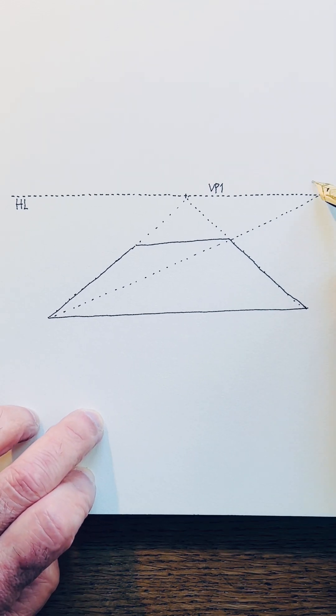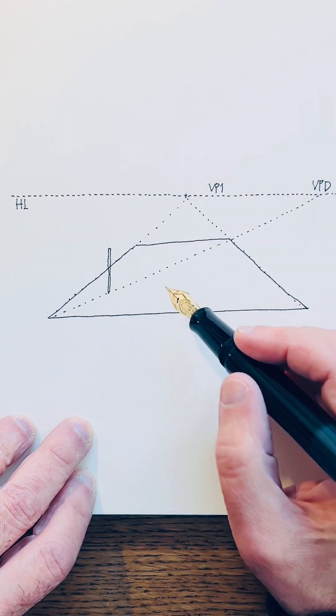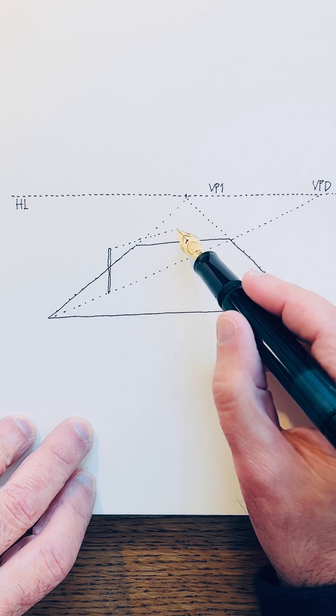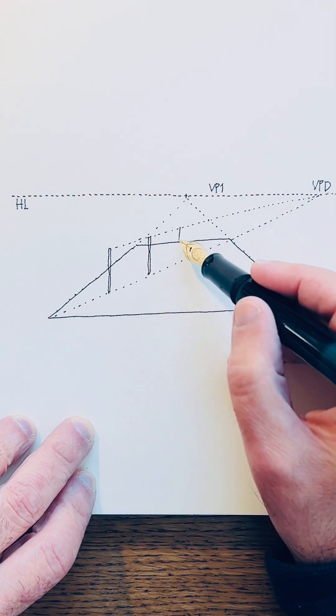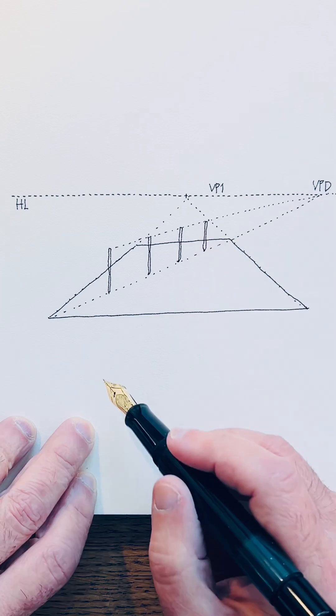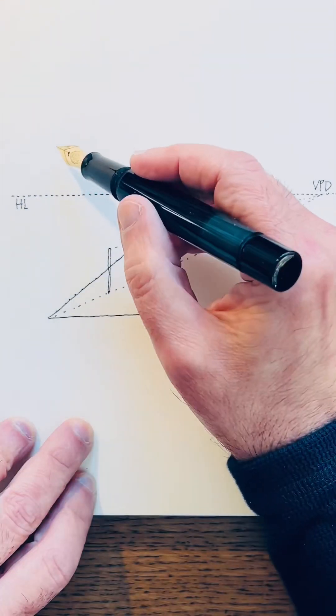Now I'm going to draw vertical posts arbitrarily and define the top to the vanishing point to define the other, so they have the exact same height. Now let's define a light source. This is arbitrary—the light source.